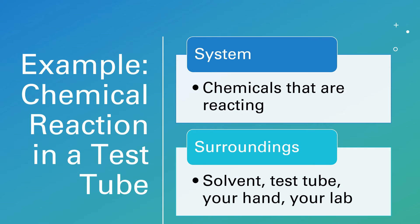For our first concrete example, let's look more closely at a chemical reaction taking place in a test tube. The system officially is the chemicals that are reacting. The surroundings are the solvent, the test tube, your hand, your lab, and everything else in the universe.